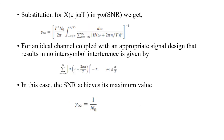Substituting for X(e^jωT), the SNR becomes γ∞ = T²/(N0 · (1/2π) ∫(−π/T to +π/T) [Σ(n=−∞ to +∞) |H(ω + 2πn/T)|²]^(−1) dω). For an ideal channel with appropriate signal design resulting in no ISI, the summation term equals T, and after simplification we obtain γ∞ = 1/N0.